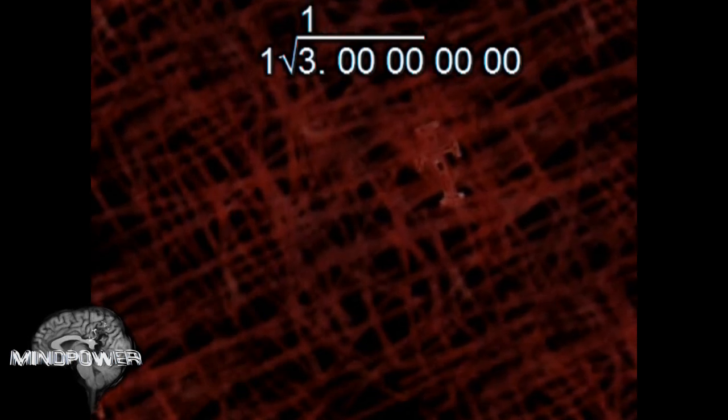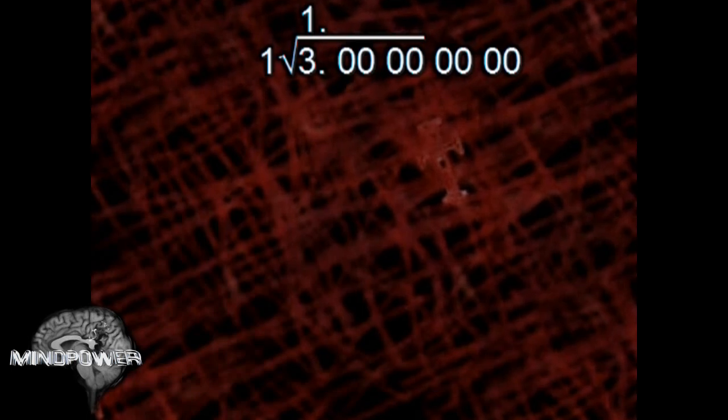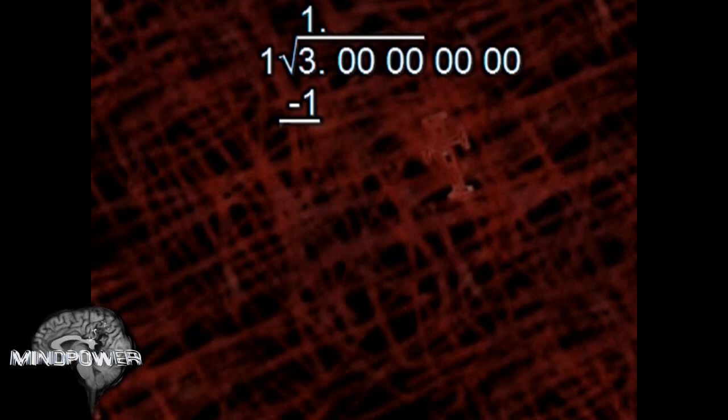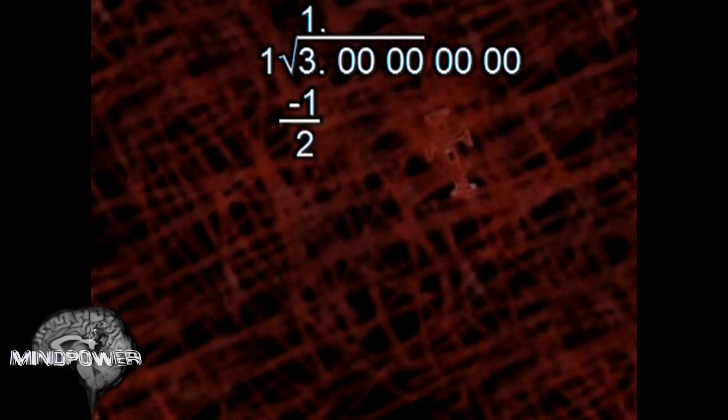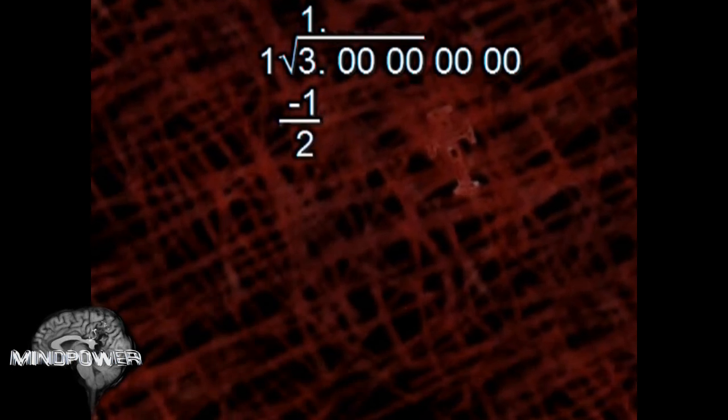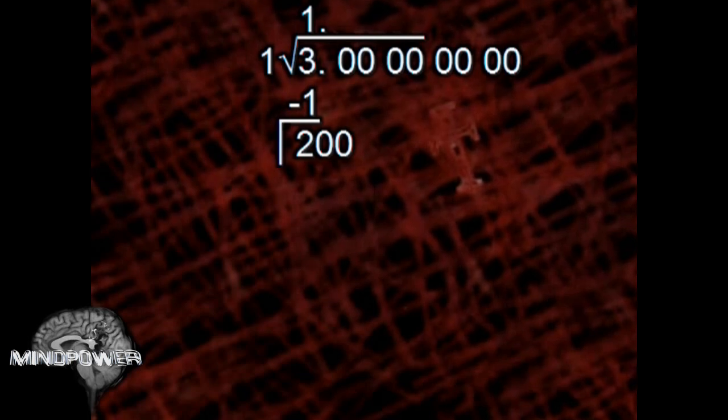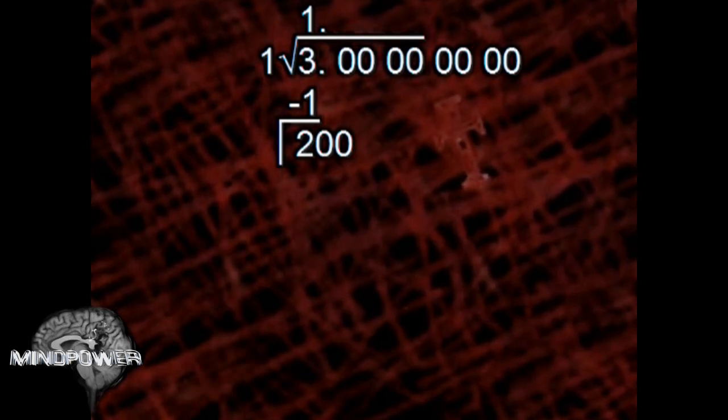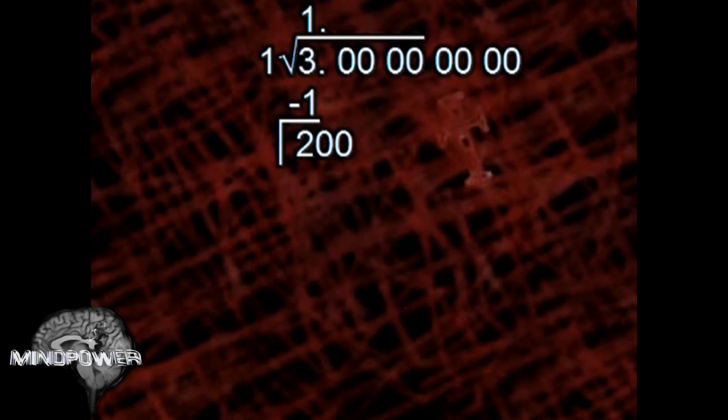We'll add a decimal point. If we multiply 1 against 1, that would be 1. We need to subtract 1 from the 3 above. That would, of course, be 2. We'll drop two of the zeros from above down below. Now we need a number to divide that by. We need to double the last digit of the number we have above. Since the number we have above is 1, that would be 2.